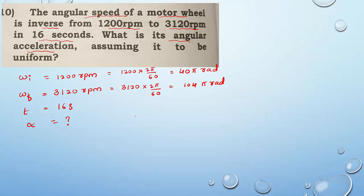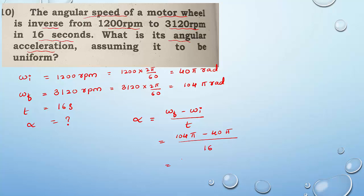Angular acceleration α is the rate of change of angular velocity: α = (ωf − ωi)/t. So α = (104π − 40π)/16 = 64π/16 = 4π radian per second squared. You can also calculate 4 × 3.142 for the numerical value. This is the value of angular acceleration.